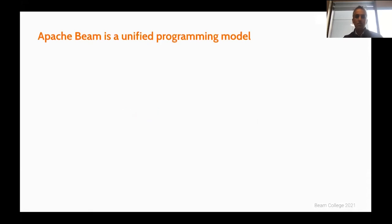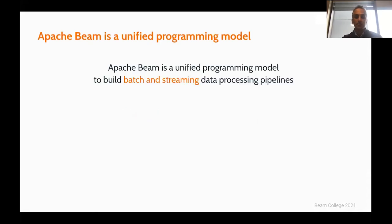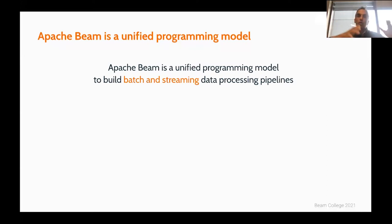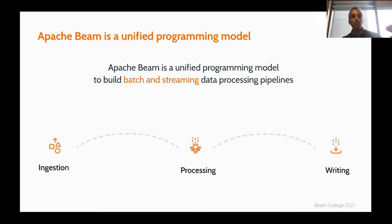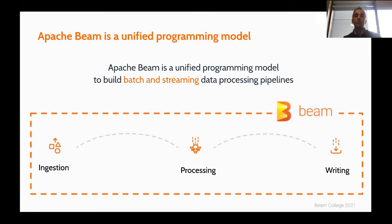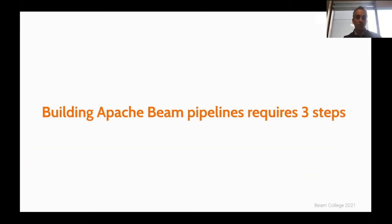So where does Beam fit in? It's unified between batch and streaming. When you have a unified programming model where there's one way to do both batch and streaming, it's incredibly powerful because you can change what you're doing on the fly without having to change your API calls.